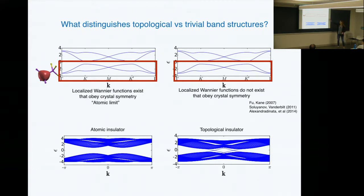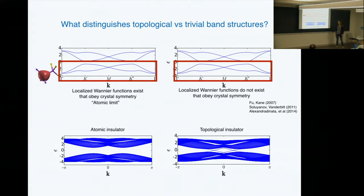The topological phases won't have this feature. I drew this picture to say you can have two band structures that look exactly the same as each other, but one could be a topological insulator and one could be an atomic insulator — maybe you see this by the presence of surface states. The point is it's not enough to just look at the band structure; you need to look at the Hamiltonian itself.